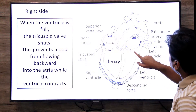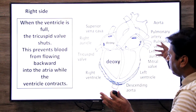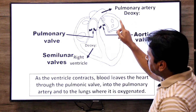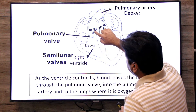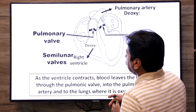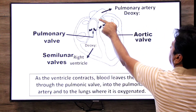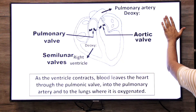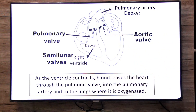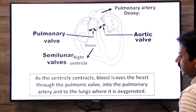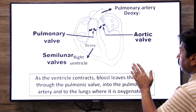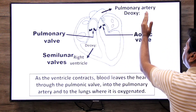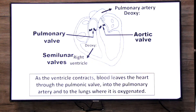Between the right ventricle and the pulmonary artery there is the pulmonary valve. When our right ventricle contracts in systole, this semi-lunar (half-moon shaped) valve — the pulmonary valve — opens, and deoxygenated blood flows into the pulmonary artery. The pulmonary artery carries this deoxygenated blood to the lungs for oxygenation. So the blood leaves the heart through the pulmonary valve into the pulmonary artery and to the lungs.